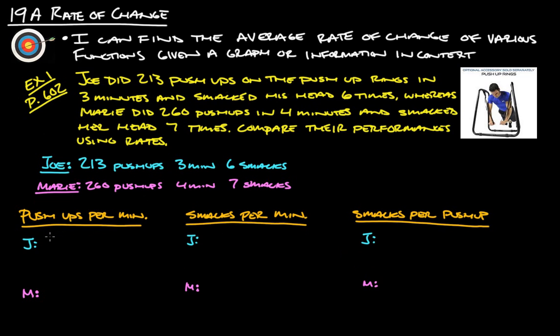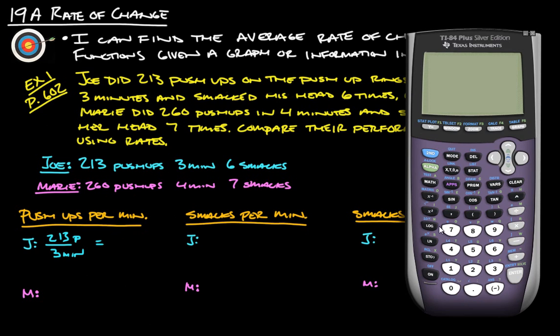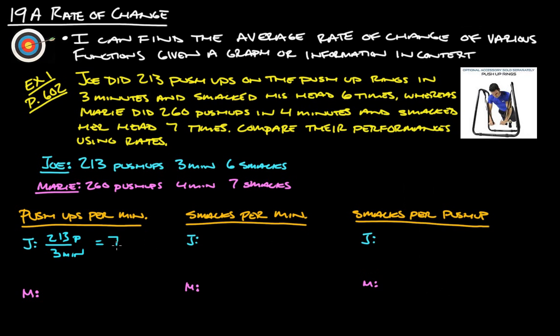For Joe, he had 213 push-ups in three minutes. Let's just calculate out what that is. So 213 divided by three gives us 71 push-ups per minute.